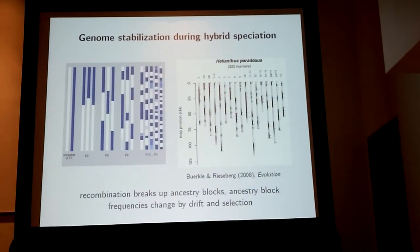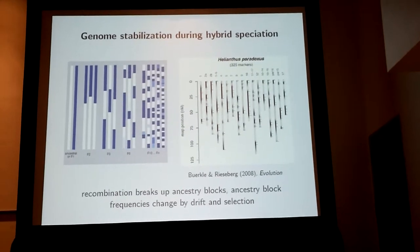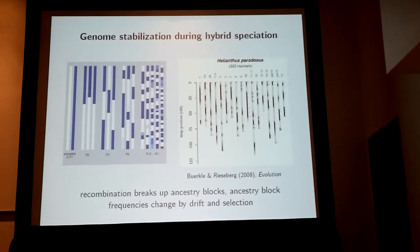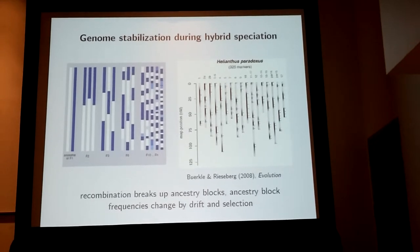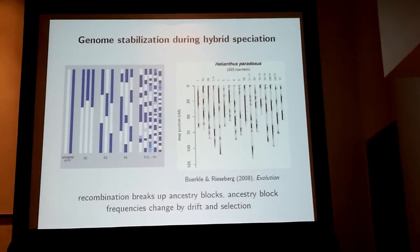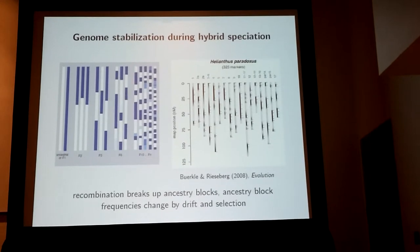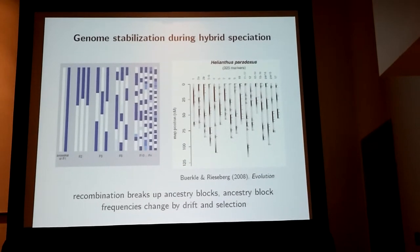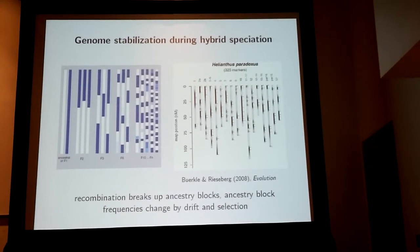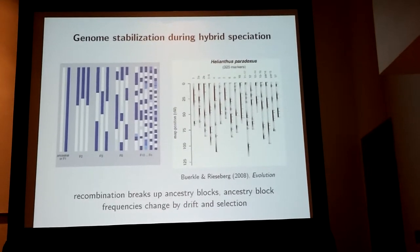Early in the hybrid speciation process, you can think of an admixed individual's genome as being composed of a series of large ancestry blocks. These are then broken up over time by recombination. Given limited gene flow with a parental species, these will eventually shift in frequency due to drift and selection, and the eventual outcome should be a genome that's stabilized in the sense that blocks from either species are fixed at any given point in the genome.